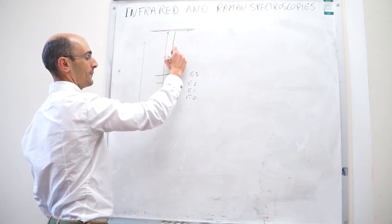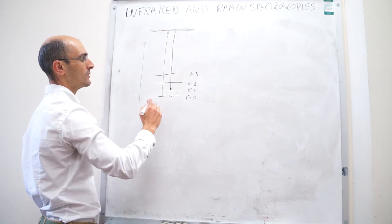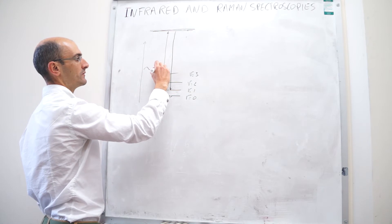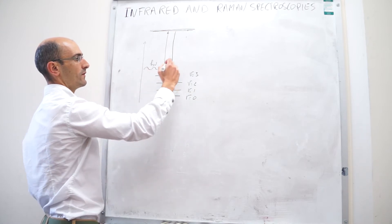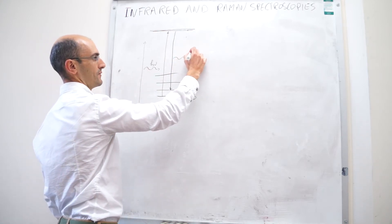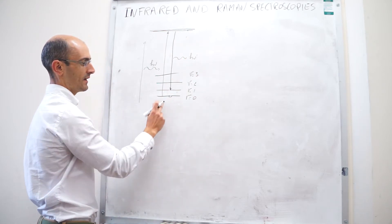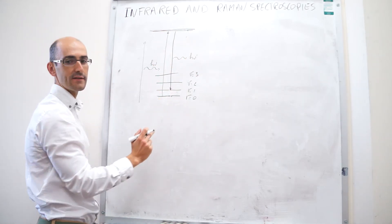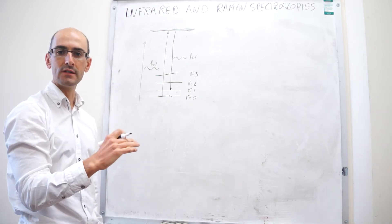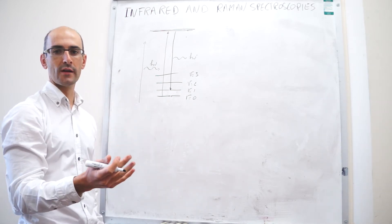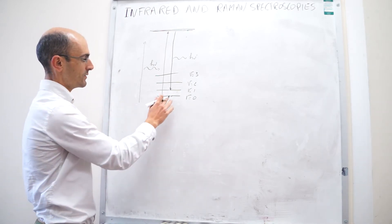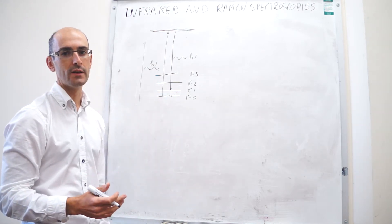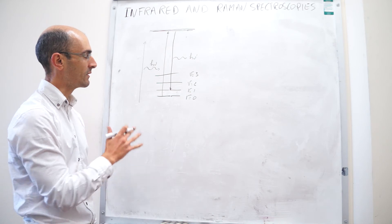Then the molecule comes back emitting a photon. In this case, the initial energy of the photon you shone on the molecule is a little bit different from the final photon — you have lost a little bit of energy. Notice that the initial and final states are V0 and V1, much as in direct infrared spectroscopy. In this case where you lose a little bit of energy, this is what is called Stokes radiation.